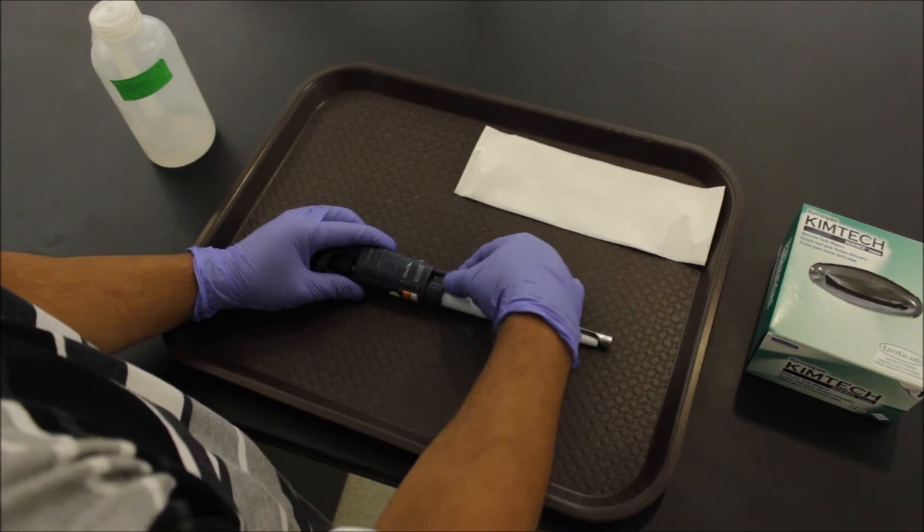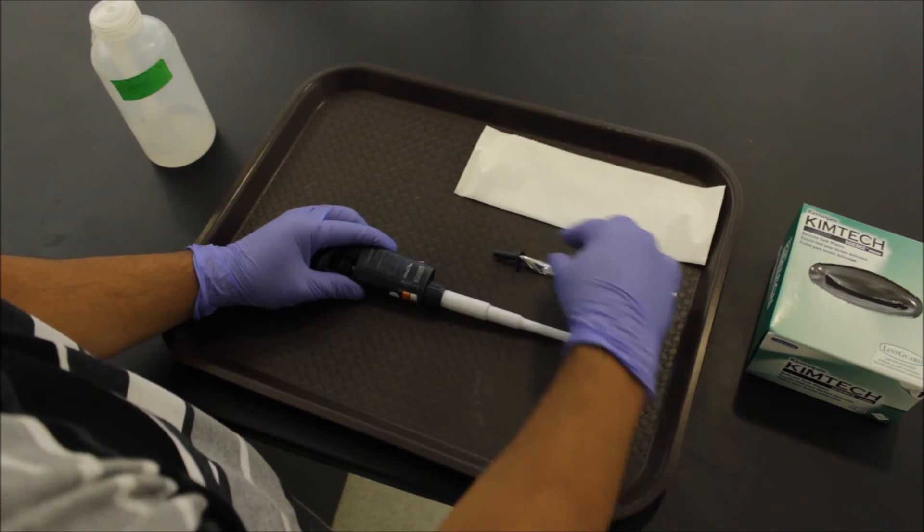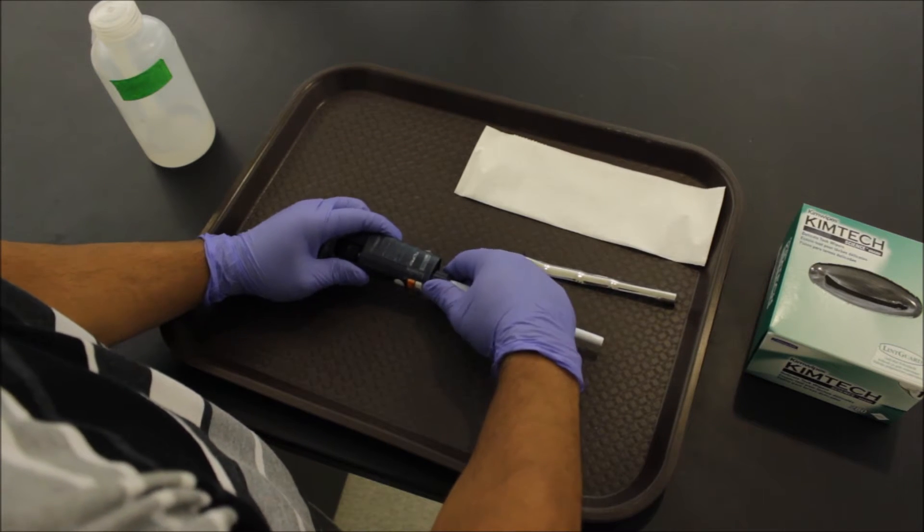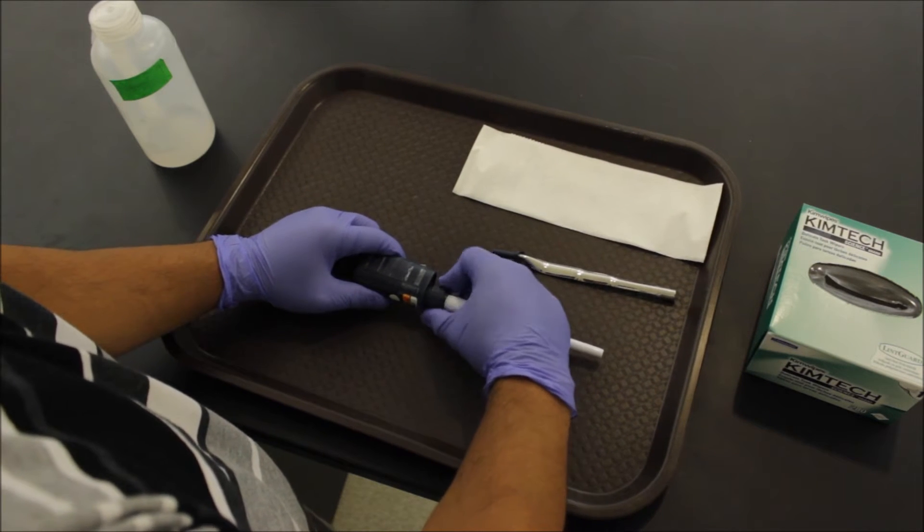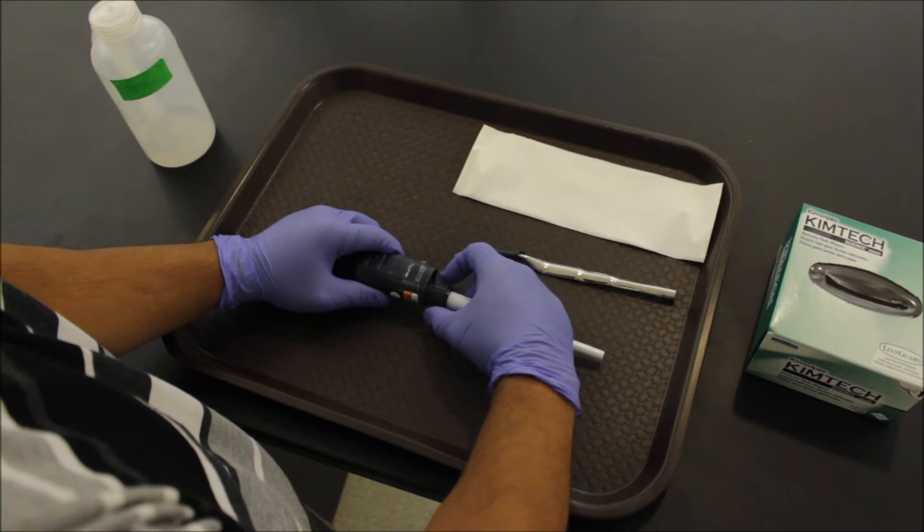So first off, you've got to come over here and take off your ejector. Set that to the side. Come grab this nut securing the barrel. Slowly twist that off, but watch for the spring which will pop.